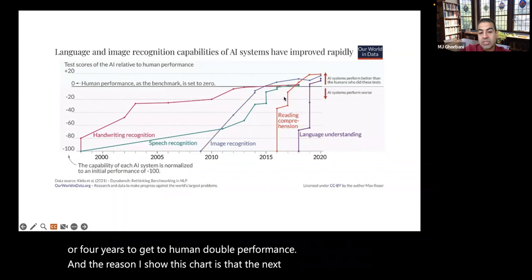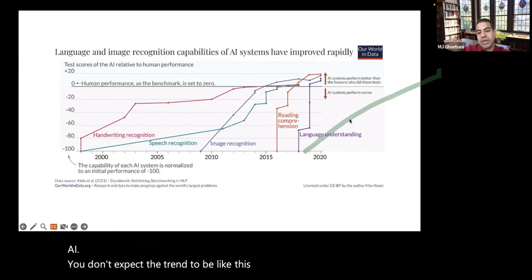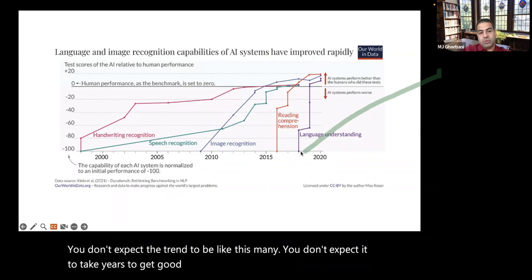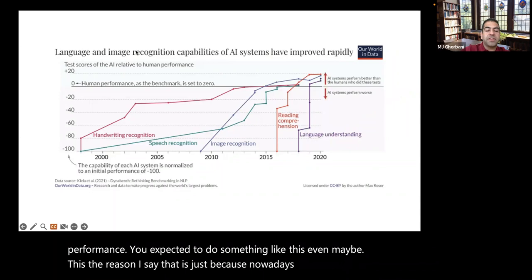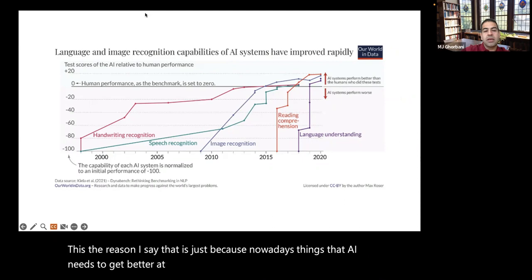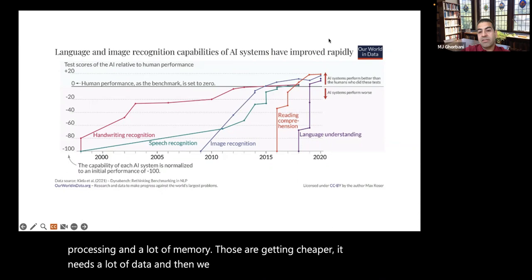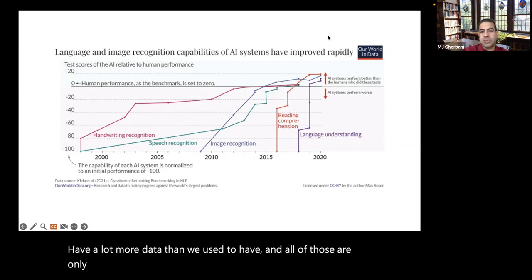The point of this chart is that the next challenge you give AI, you don't expect it to take as many years to get to human-level performance as before. Things that AI needs to get better at different tasks — a lot of processing, a lot of memory — are getting cheaper. We have a lot more data than we used to. All of that is only going to let AI get better and better.